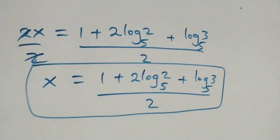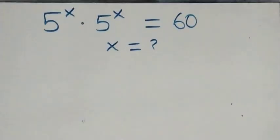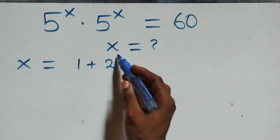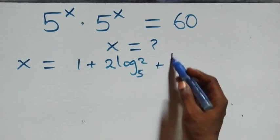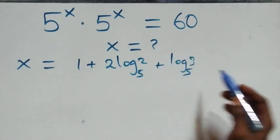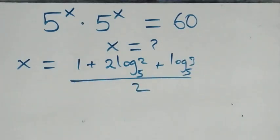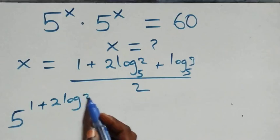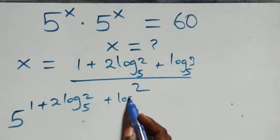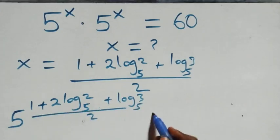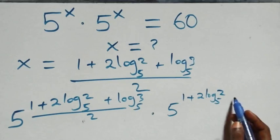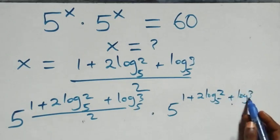Now let's check if this satisfies the given problem. We substitute x equals (1 plus 2 log₅2 plus log₅3) all over 2 back in, giving 5 raised to that power times 5 raised to that same power, and check whether it equals 60.